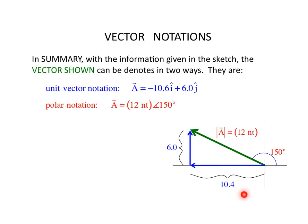So this is the way that you could receive information about a given vector. You could be given the magnitude of the components. You could be given the whole magnitude and the angle.